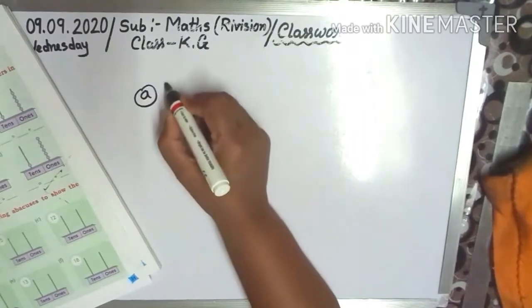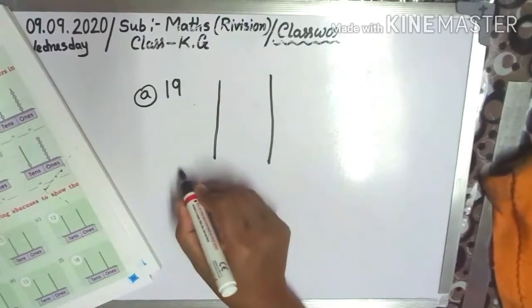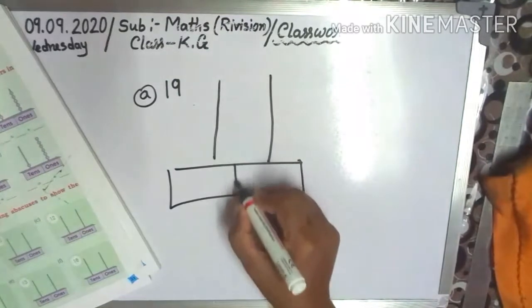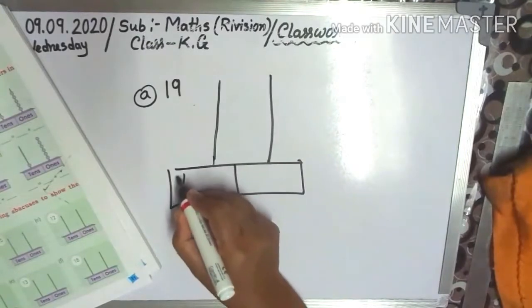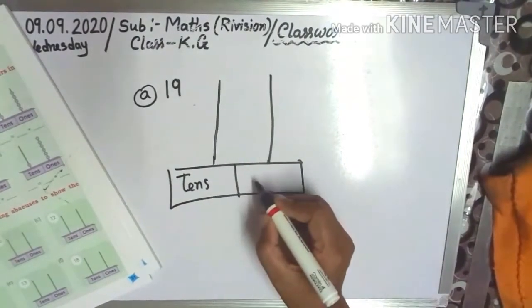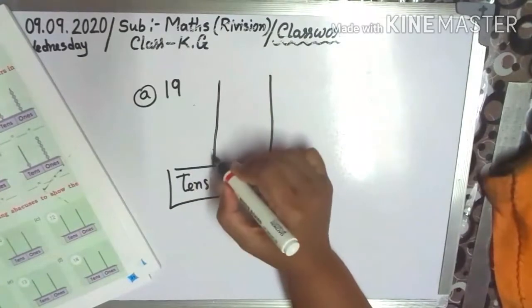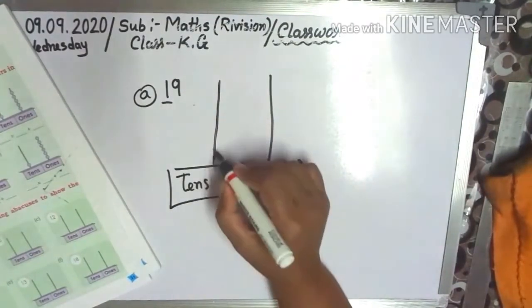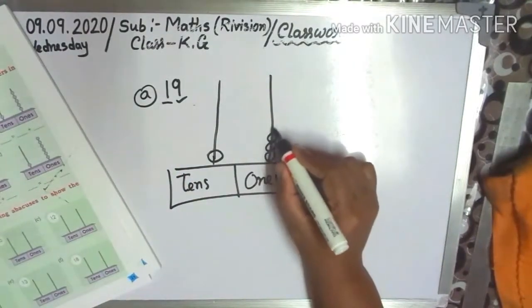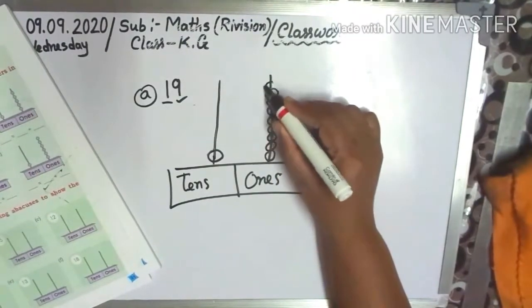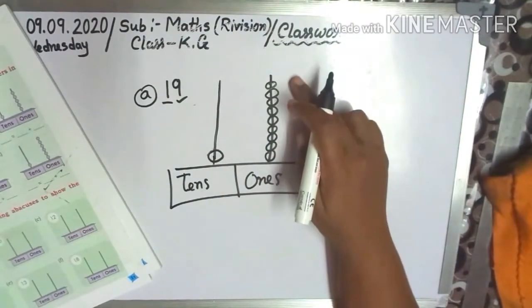A: 19. So draw your bits. I draw bits. 19 — your 10s place: this is 10s, and 1s. Draw first: 10s for 19 — 1 ten. Then count 1, 2, 3, 4, 5, 6, 7, 8, 9 in the ones place. So 1 ten and 9 ones.